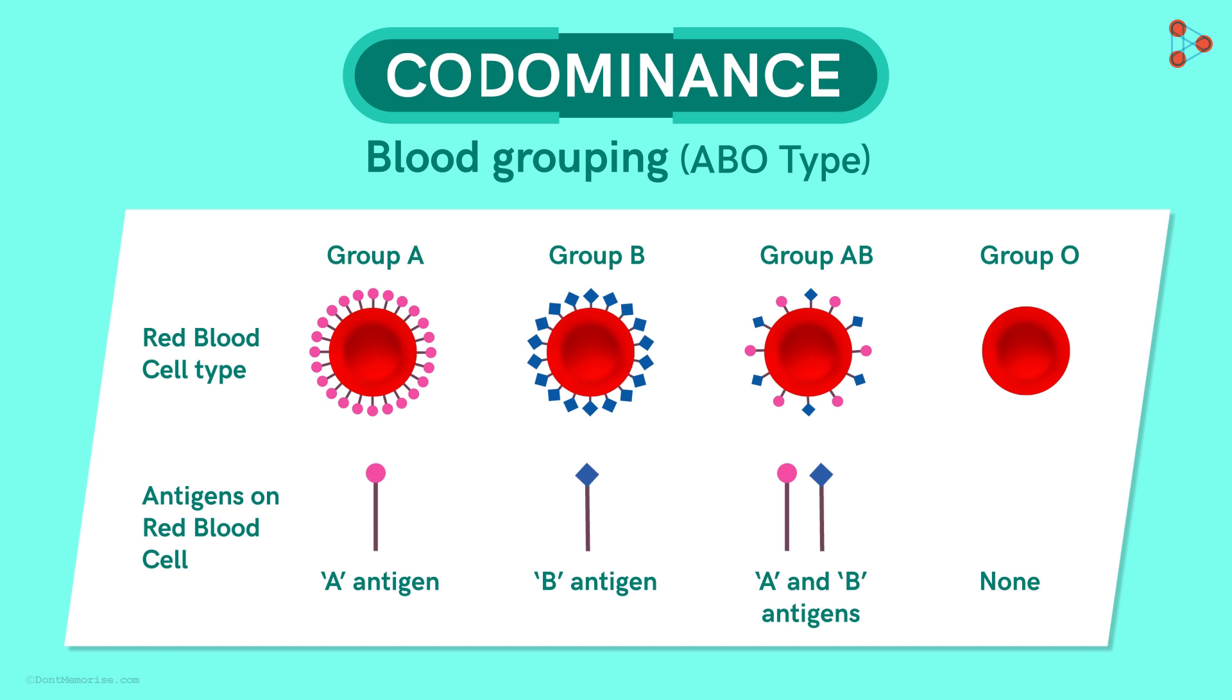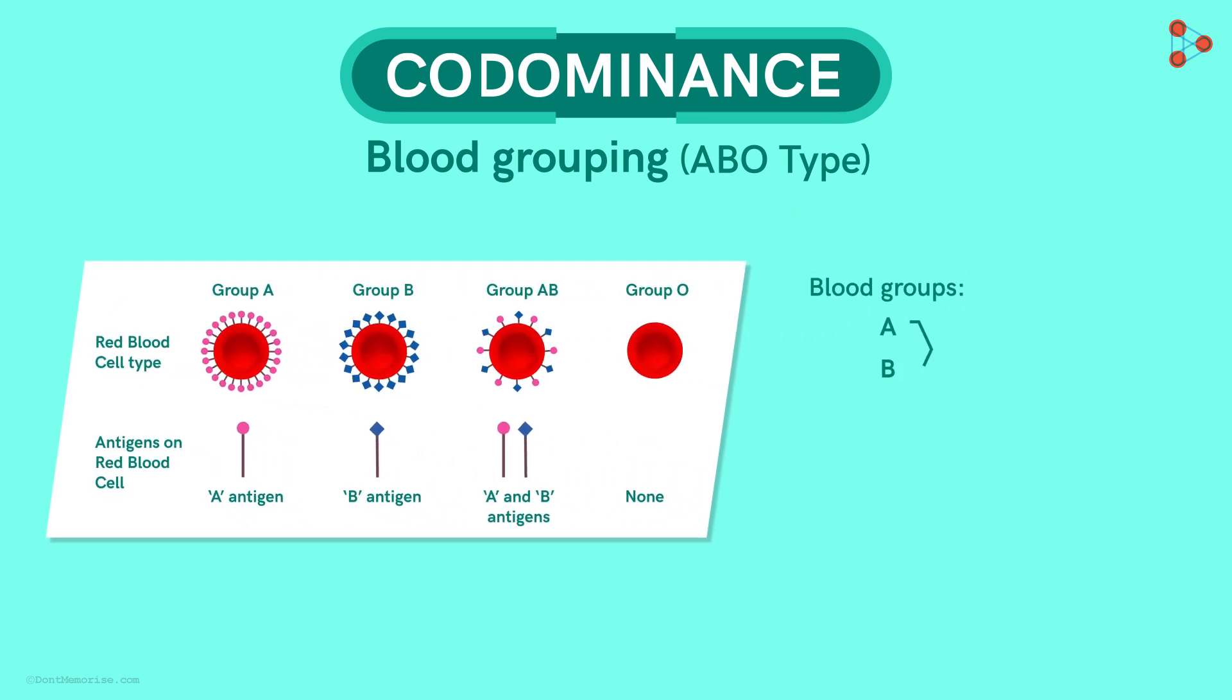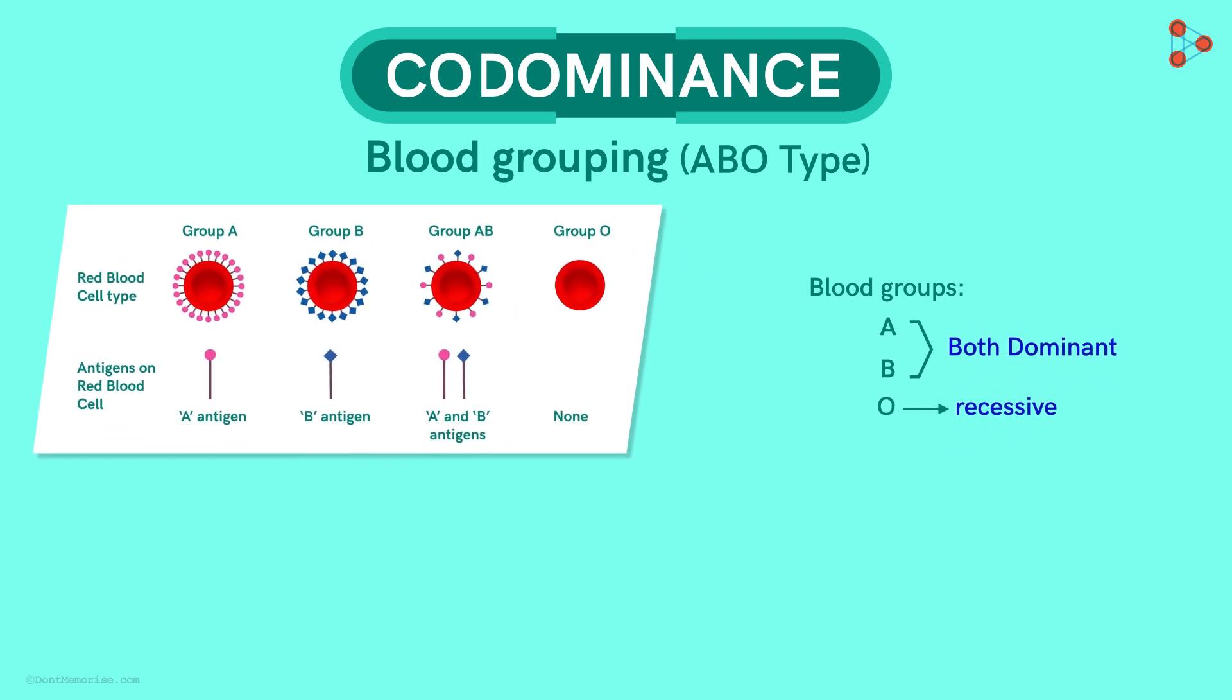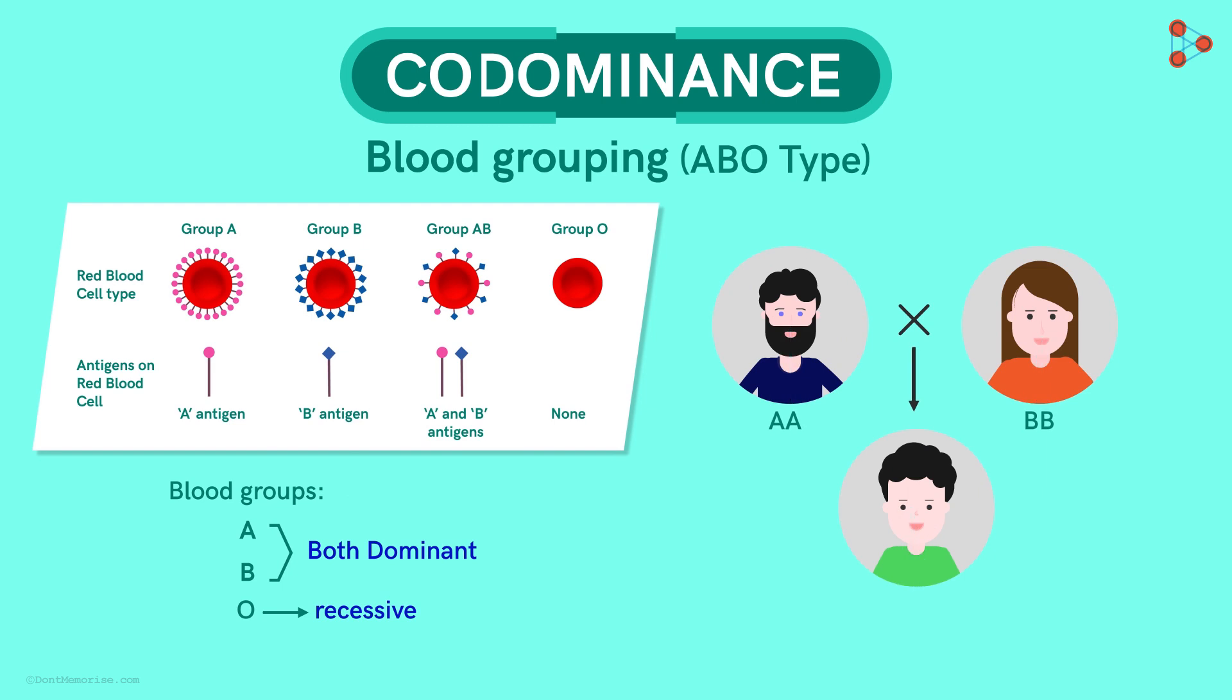Now getting back to our concept, how is co-dominance seen in these blood groups? In the case of human blood groups, the types A and B are both dominant, while O is the recessive type. Now if the offspring has one allele for A blood group and the other for B blood group, then the phenotype obtained will be AB blood group. This is how co-dominance is found in humans in the case of blood groups.